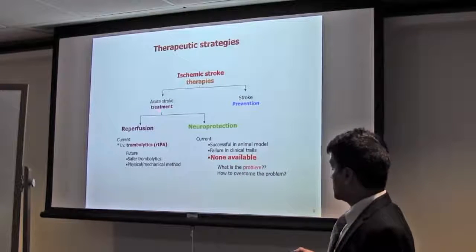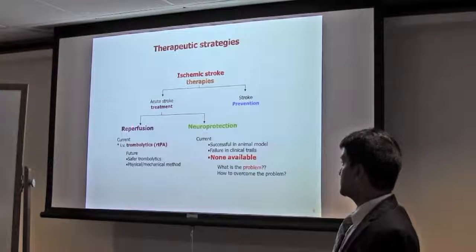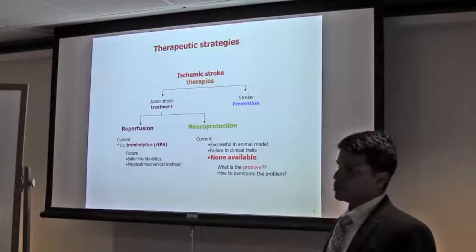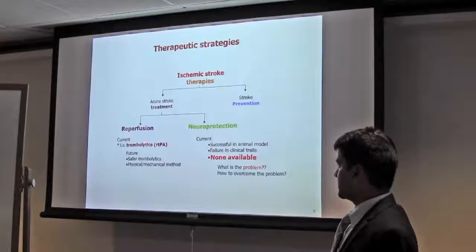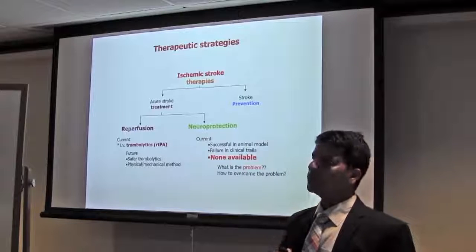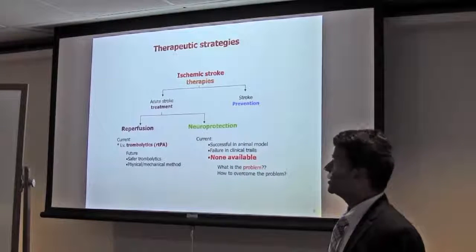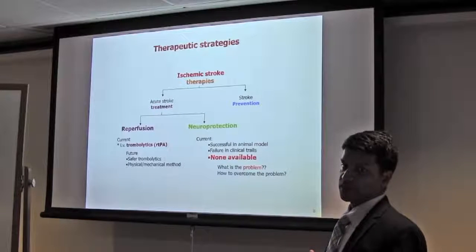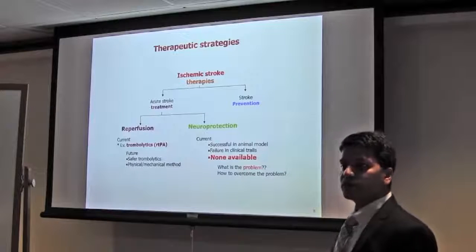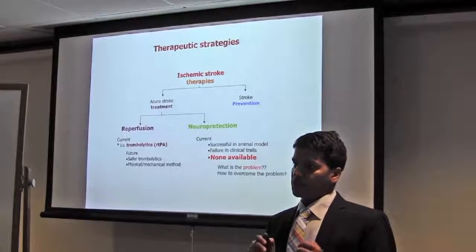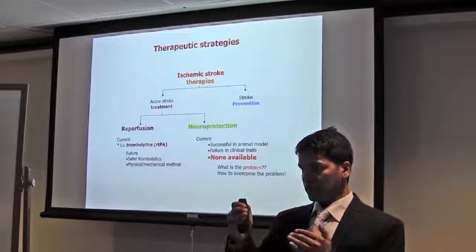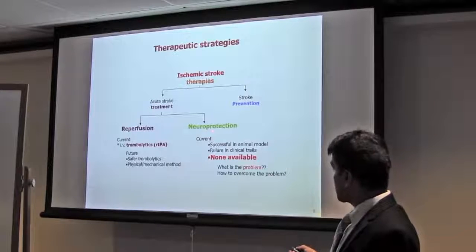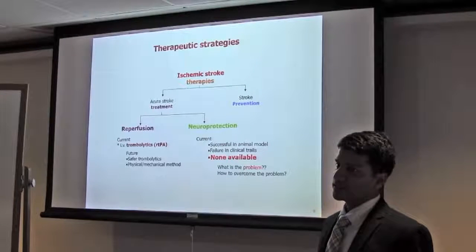So far, for treatment of acute stroke, there are two main approaches. One is reperfusion. For this, there is only one drug available so far, tissue plasminogen activator (tPA), which is thrombolytic. But it has limited use because it has short therapeutic window, within four to five hours, and also chance for further hemorrhage. It cannot be given for hemorrhagic stroke, only ischemic. Another potential approach is neuroprotection, in which we can apply drugs to prevent cell death, mainly neuronal cell death.